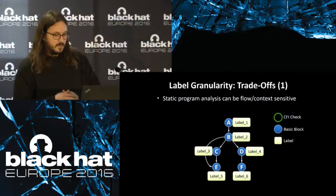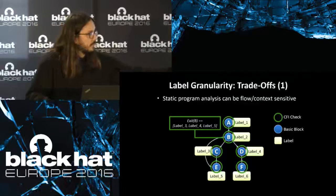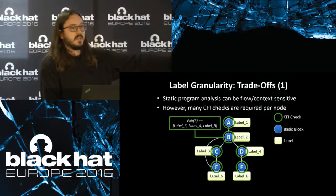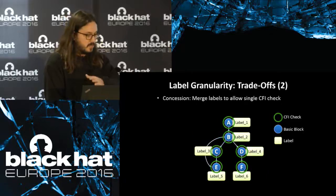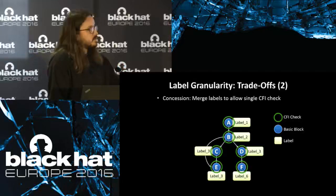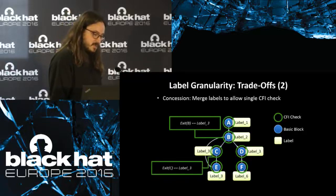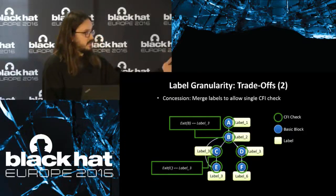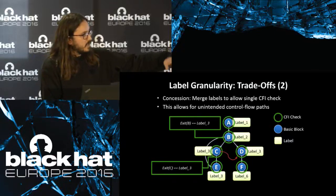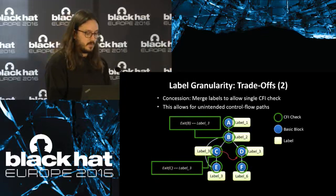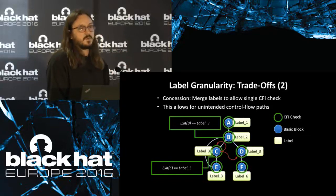As an example, static analysis that's flow and context sensitive can recover completely the intended control flow targets, but requires many CFI checks and degrades performance. As an optimization, we merge labels — in this case labels 4 and 5 from node B — to reduce the number of checks before each control flow transfer. This CFG precision reduction reduces security because an attacker can redirect control flow to labels where merging has occurred, such as redirecting from node C to node D or looping back to node C.